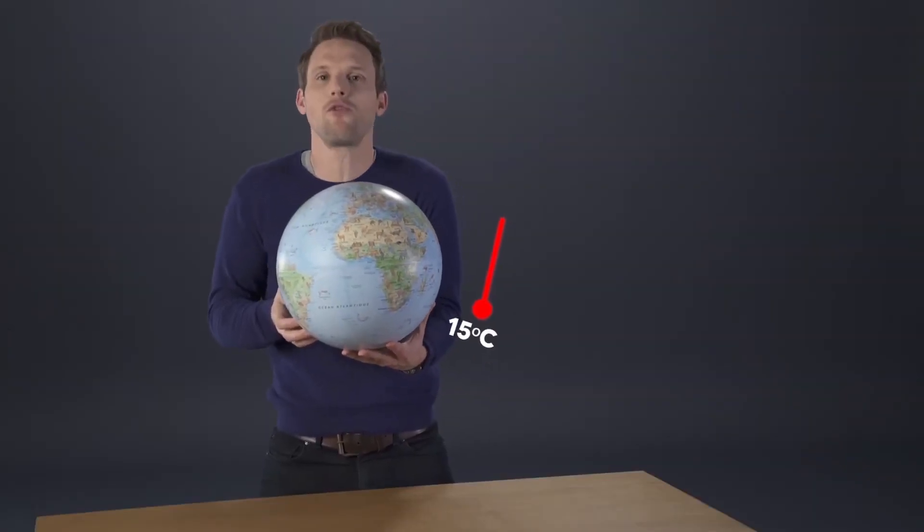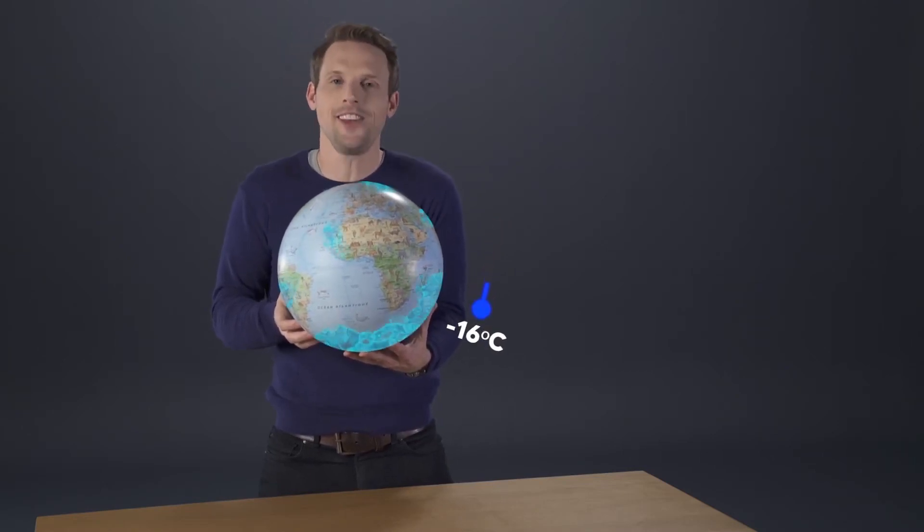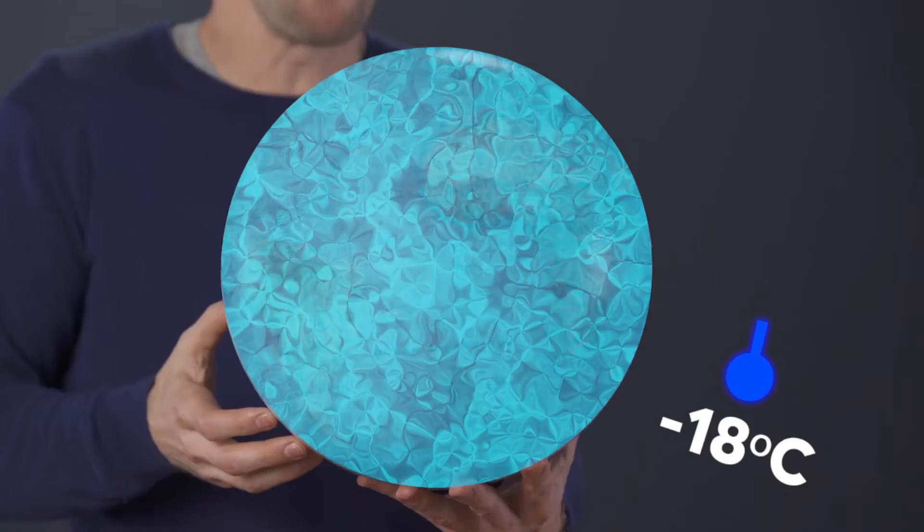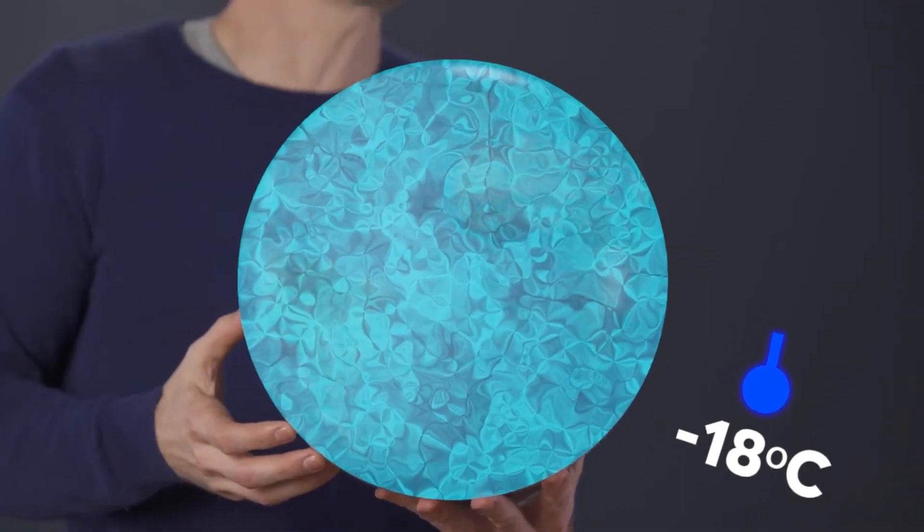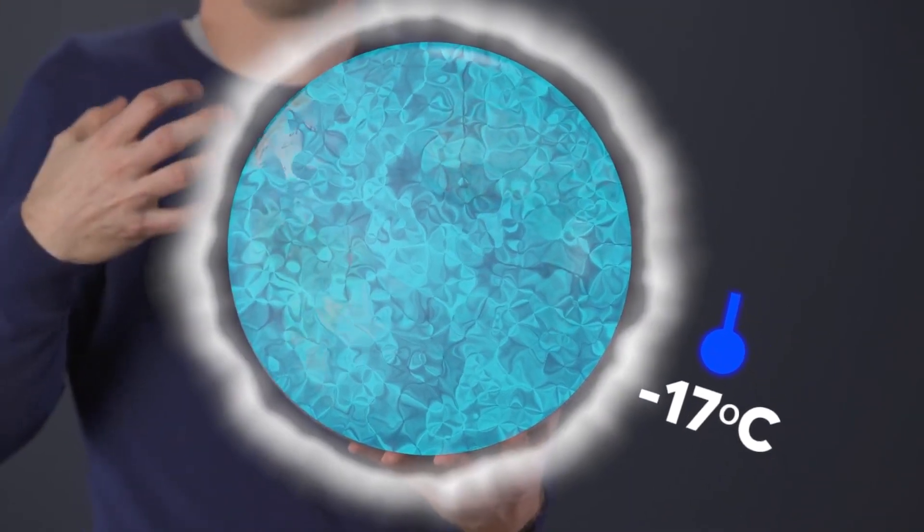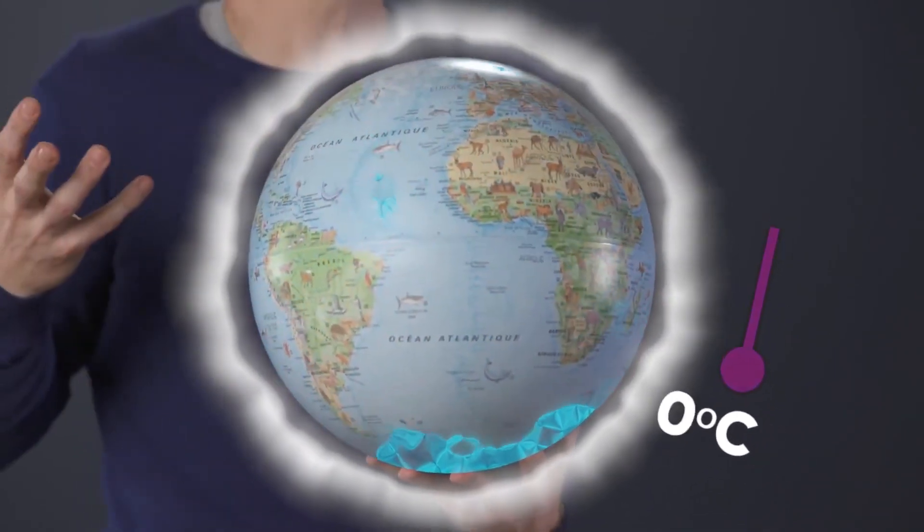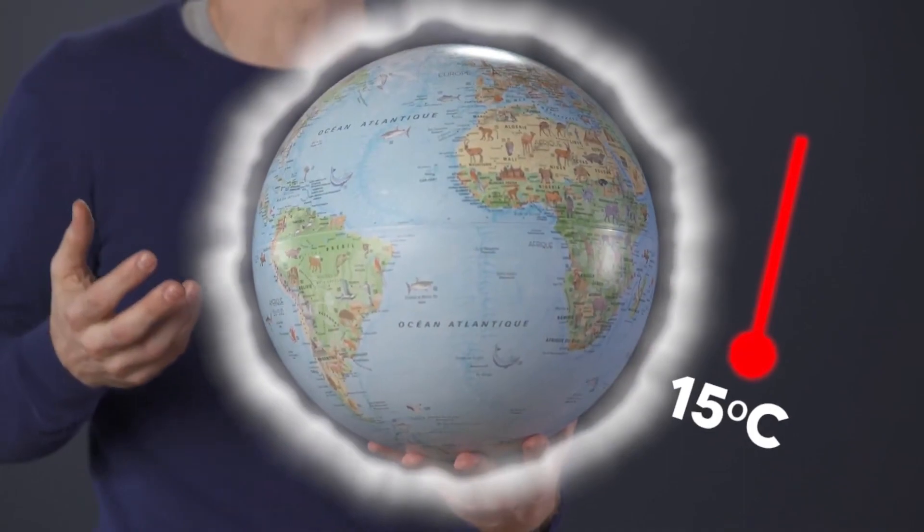Without our atmosphere containing that 1% of greenhouse gases, Earth's average temperature would be minus 18 degrees C. Minus 18. That is the temperature of your freezer. Luckily for us, Earth has this atmosphere to keep us at a comfortable average temperature of plus 15 degrees C.